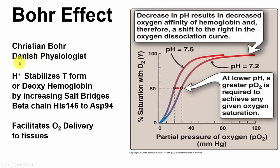The Bohr effect was discovered by Christian Bohr, a Danish physiologist. Protons and hydrogen bonding stabilize the deoxy form of hemoglobin, the tight form. Increasing salt bridges — here's one in the beta chain between histidine 46 and aspartate 194 — and the tightness from protons added to that stabilizes and facilitates O2 delivery to the tissues.